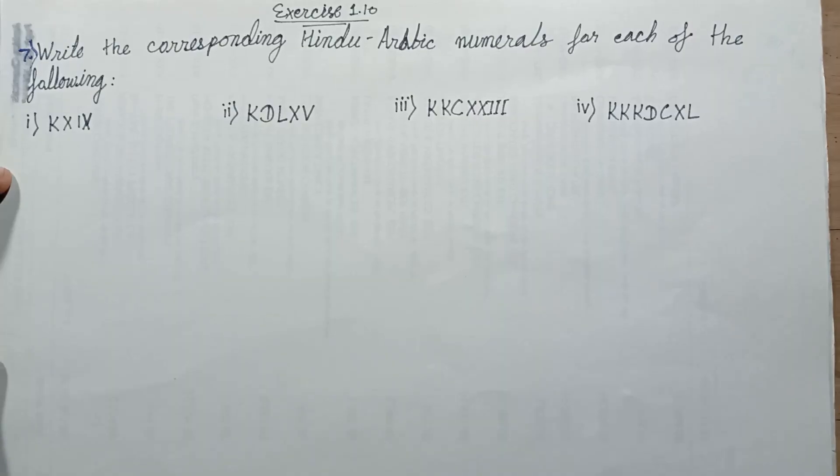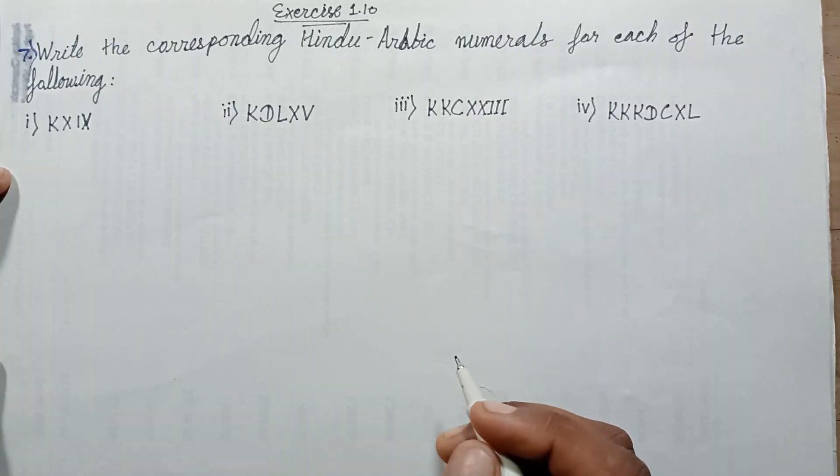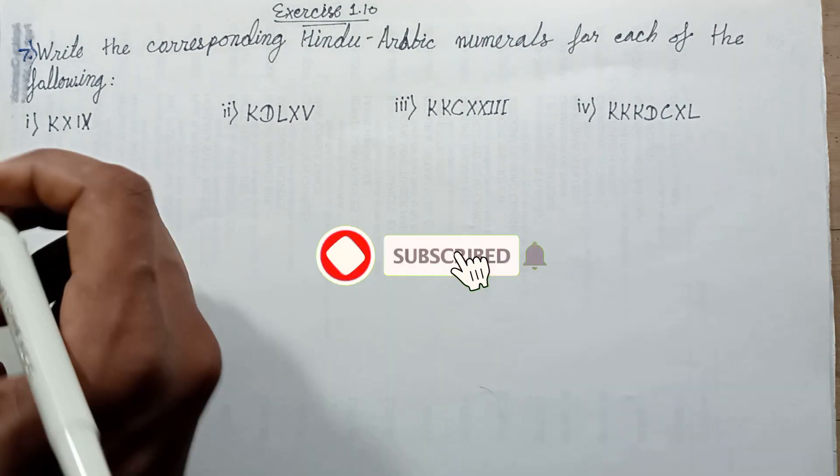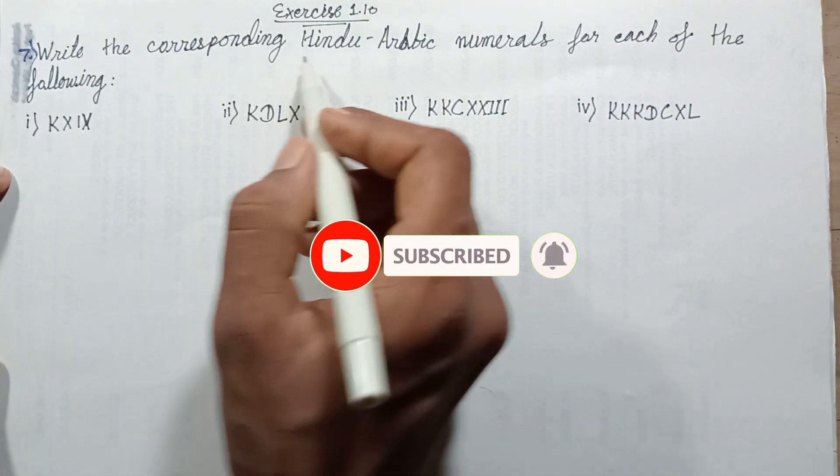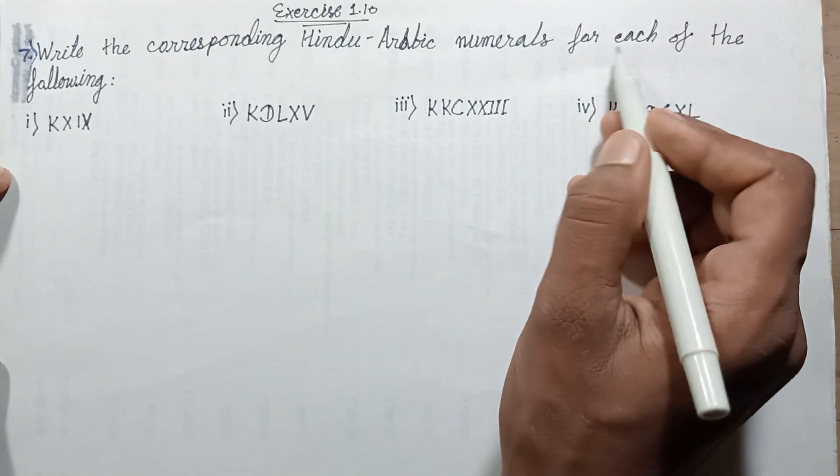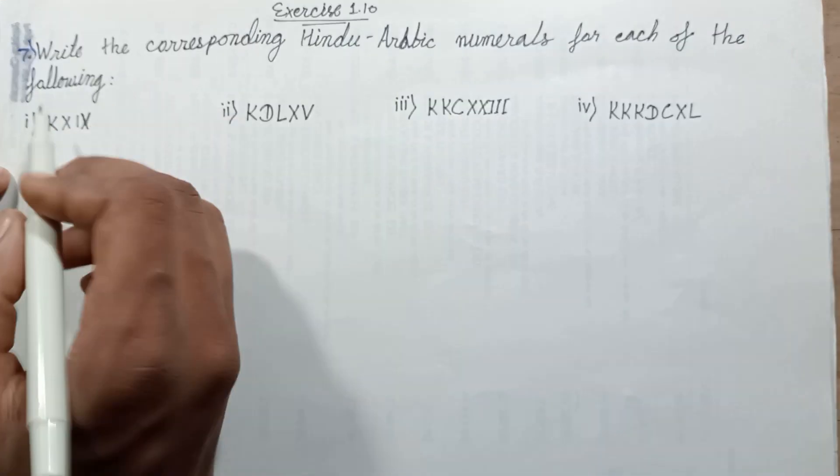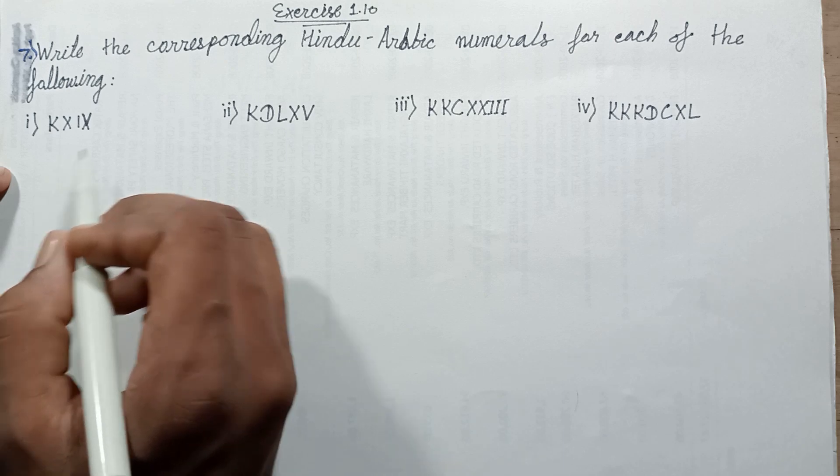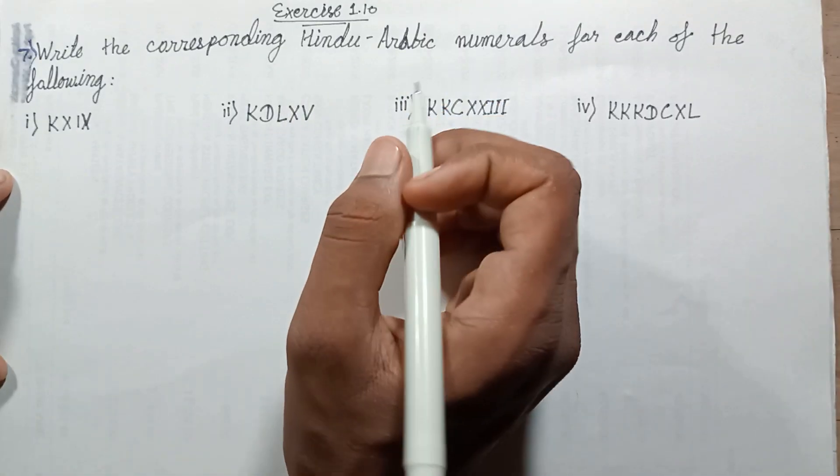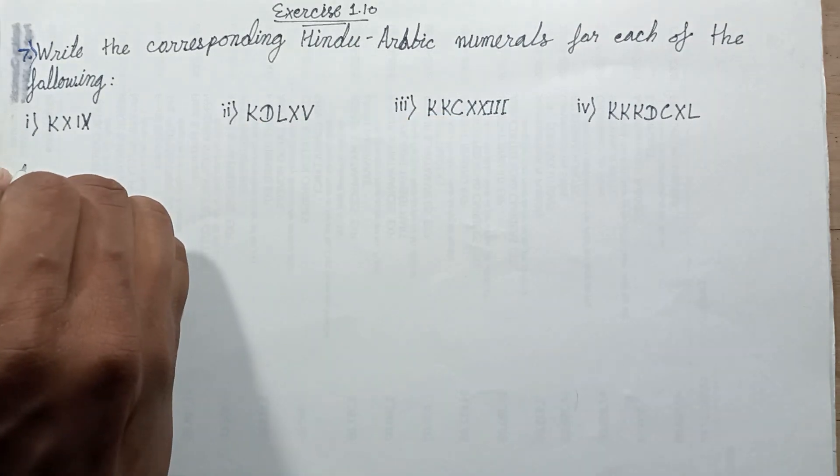Hello everyone, welcome back to this episode. This episode discusses question number 7, Exercise 1.10: Write the corresponding Hindu-Arabic numeral for each of the following. This number, write in corresponding form, corresponding Hindu-Arabic numerals form. Let's solve one by one.